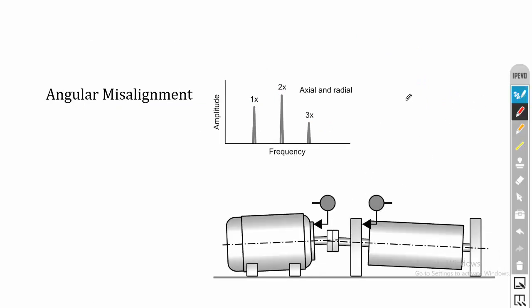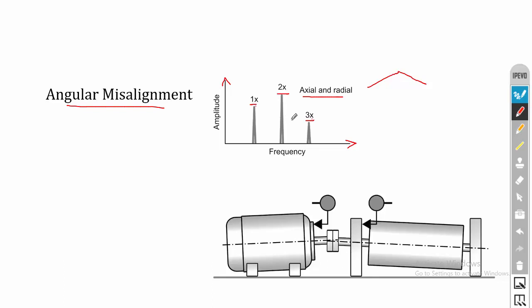The second type is angular misalignment, where the shafts are not collinear and are at an angle. In the case of angular misalignment, in both the axial and radial directions we get 1x, 2x, and 3x harmonics. The x-axis is frequency and y-axis is amplitude. For example, if the system runs at 100 RPM, you get peaks at 100, 200, and 300 RPM. So if it is parallel misalignment, you get 1x, 2x, 3x at radial direction; if angular misalignment, you get 1x, 2x, 3x at both axial and radial directions.